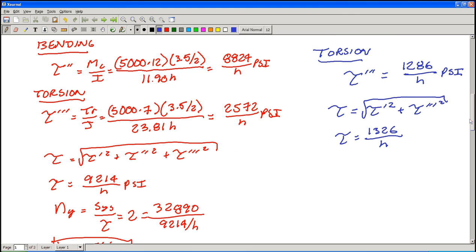Which comes out to be 1326 divided by H. We're plugging that into the exact same factor of safety equation. So we've got 2 equals 32,890 divided by 1326 over H. Which gives us a height 0.08 inches. Much smaller. The weld's doubled and it doesn't have to carry any bending stress. So smaller weld is what we would expect there.